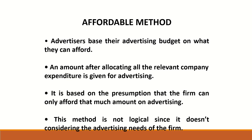The first one is the affordable method. Advertisers base their advertising budget on what they can afford. An amount after allocating all the relevant company expenditure is given for advertising. This method is based on the presumption that the firm can only afford that much amount on advertising. This method is not logical since it doesn't consider the advertising needs of the firm.